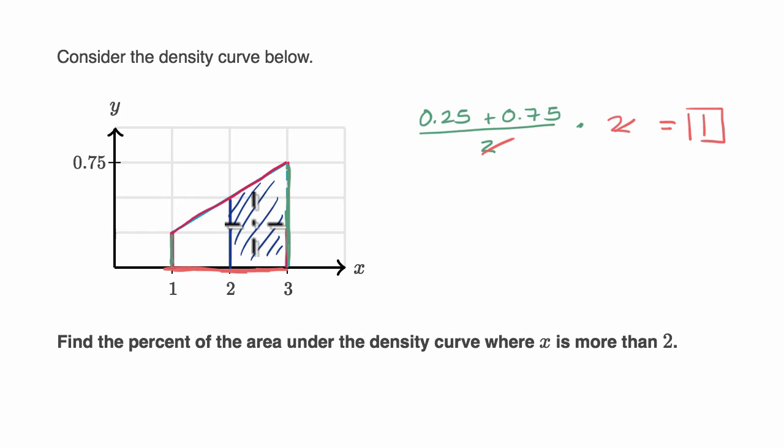Now let's think about what percentage of that area is represented in blue right over here. We could do the same thing. This is a trapezoid. We want to take the average of this side and this side and multiply it times the base.